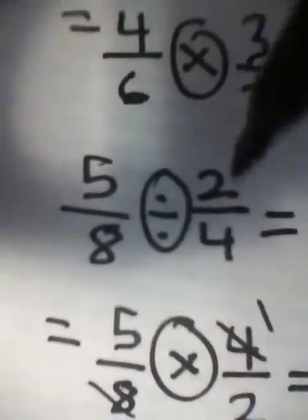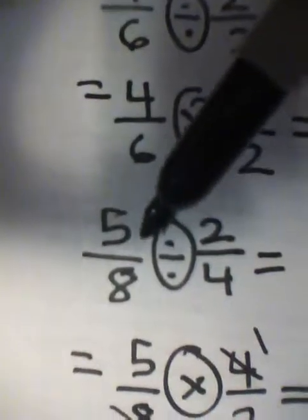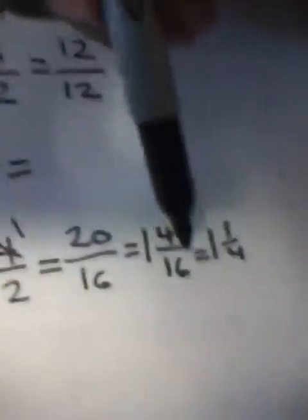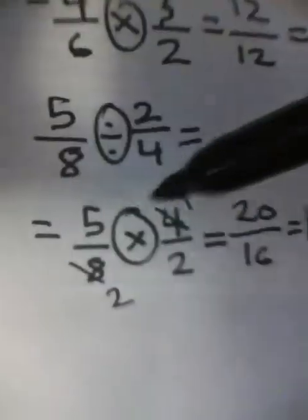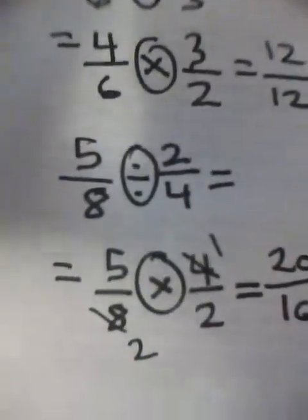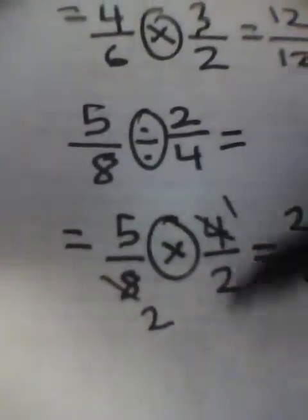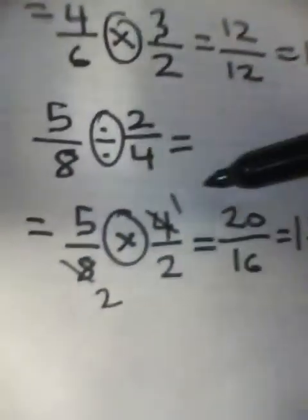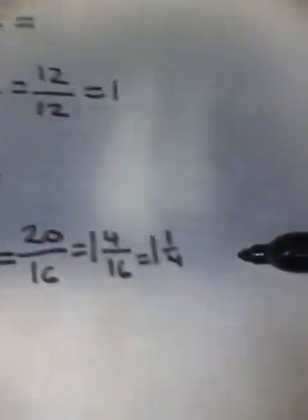Next: 5 over 8 divided by 2 over 4. You do the same thing — change the division sign to a multiplication sign and switch the second fraction, so 2 over 4 becomes 4 over 2. Then 5 times 4 equals 20 and 8 times 2 equals 16, and you convert it to a mixed fraction. You can also cancel: 8 divided by 4 equals 2, 4 divided by 4 equals 1, giving 5 times 1 over 2 times 2 — so 5 over 4.